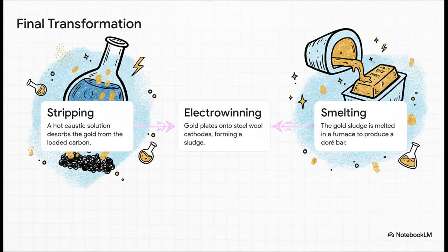First, the gold-loaded carbon is stripped, using a hot caustic solution that basically washes the gold right back off, creating this super-concentrated liquid. Second, that liquid undergoes electro-winning. They run an electric current through it, which plates the gold onto steel wool, forming this thick, muddy sludge.